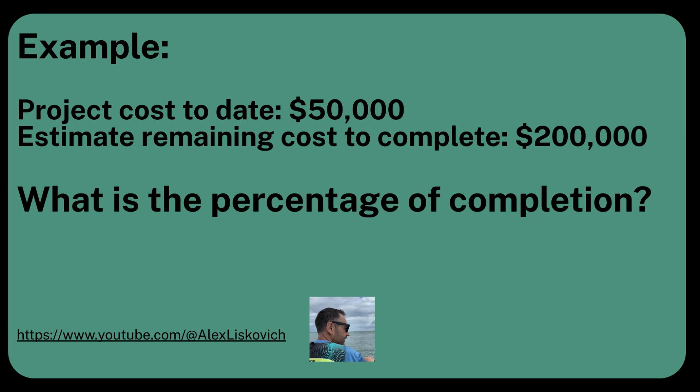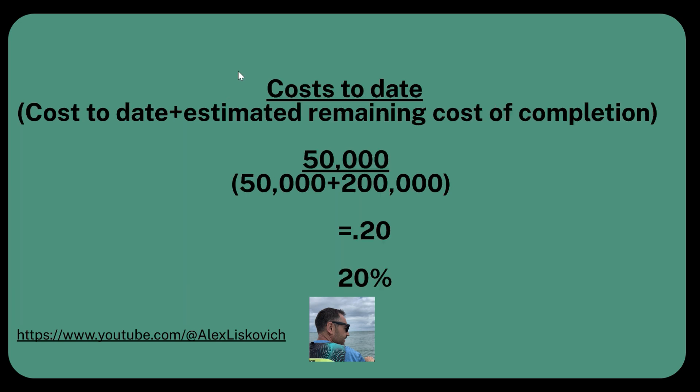All that's left is to do the actual calculation. What is the percentage of completion? Cost to date — fifty thousand dollars — divided by cost to date plus estimated remaining cost, which is fifty thousand plus two hundred thousand. So it's essentially fifty thousand over two hundred fifty thousand, which equals 0.20. Move the decimal two places or multiply by one hundred with your calculator, and the answer is twenty percent — that's the percentage of completion.